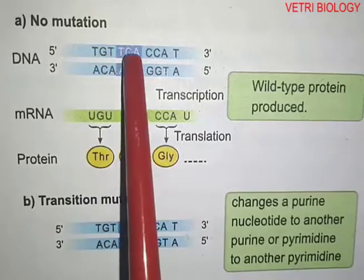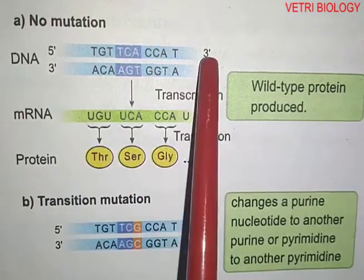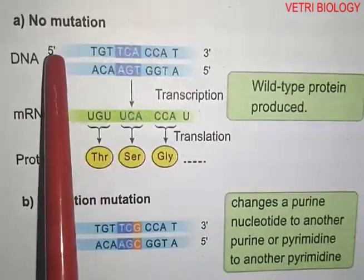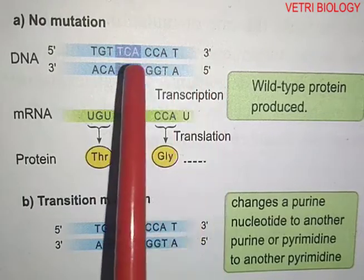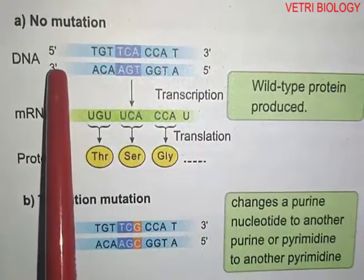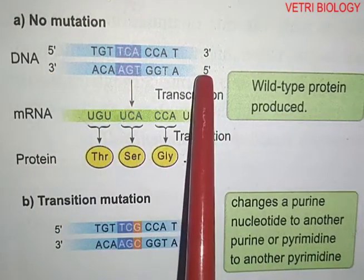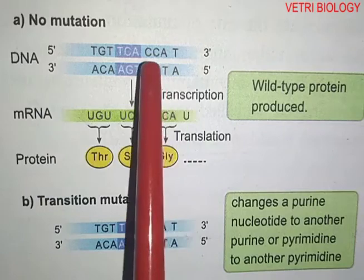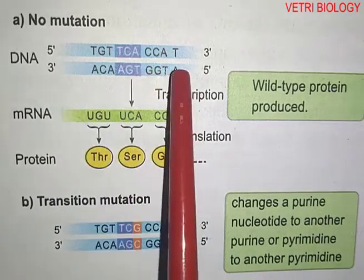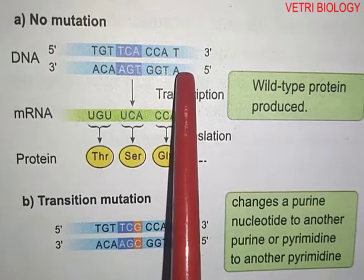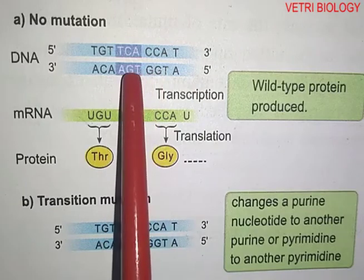This is a DNA polynucleotide chain showing the 5' to 3' sequence in a double helical structure. This diagram illustrates the protein synthesis process, showing how genetic information flows from DNA.